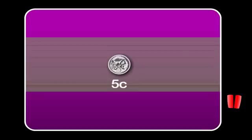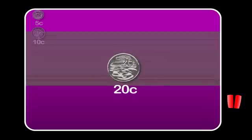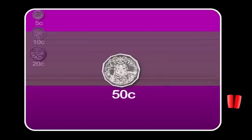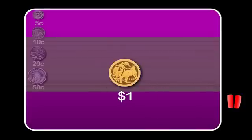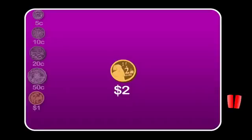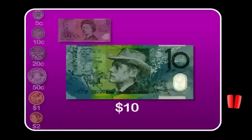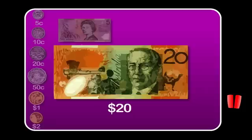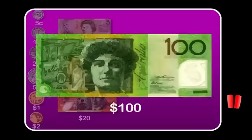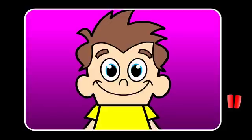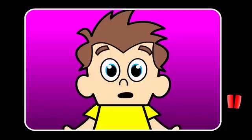Here are all the coins and notes in order of their value: 5 cents, 10 cents, 20 cents, 50 cents, 1 dollar, 2 dollars, 5 dollars, 10 dollars, 20 dollars, 50 dollars, 100 dollars. You can add money together to make larger amounts.